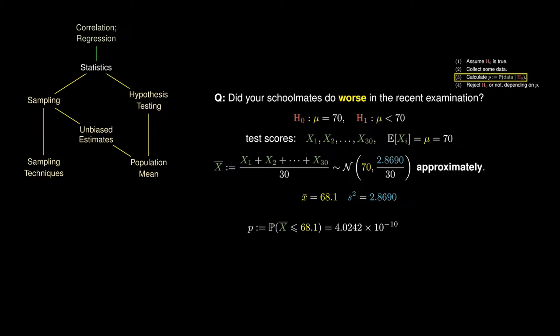The convention is to take 0.05, known as the level of significance. When we compare the p-value and the level of significance alpha, the p-value is smaller than the level of significance. Since the p-value is smaller than the level of significance, a sample mean of 68.1 is really unlikely, which means we have sufficient evidence to reject the status quo. This helps us conclude that the alternate guess is probably true. That is, our schoolmates actually did worse in this examination.